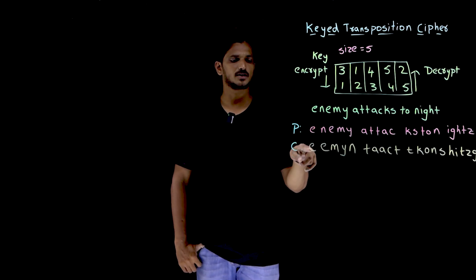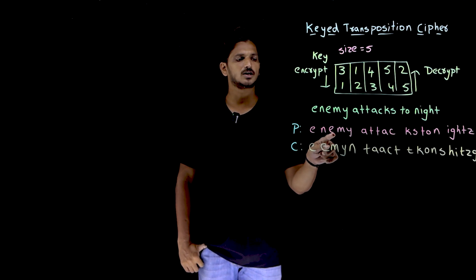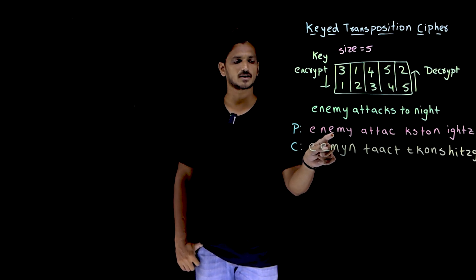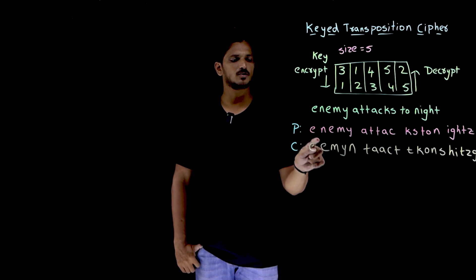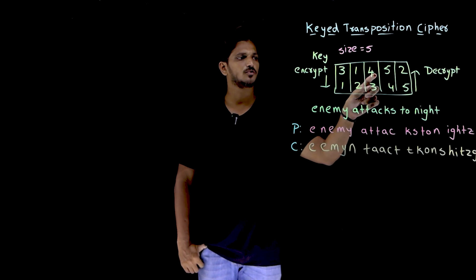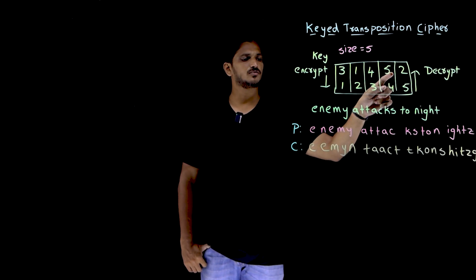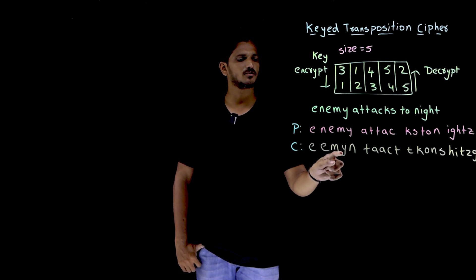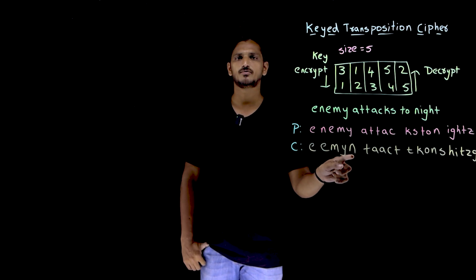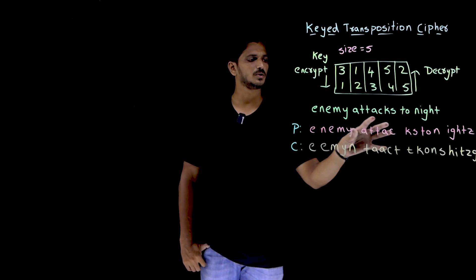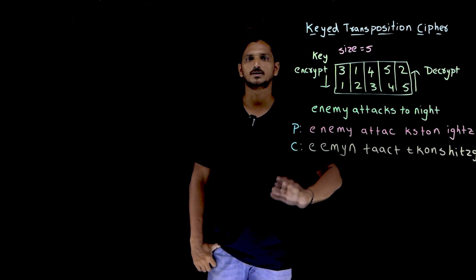Now let's understand this. The plain text will be converted into cipher text. The third character will be placed in the first position. First character will be placed in the second position. Fourth character will be placed in the third position. Fifth character Y will be placed in the fourth position, and second character N will be placed in the fifth position. Repeat this for the second group of five, third group, and last elements.